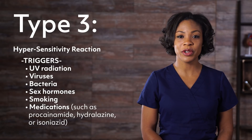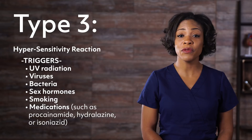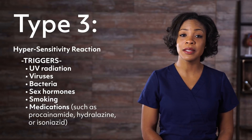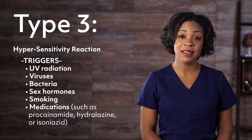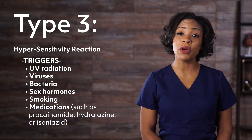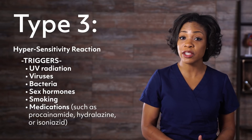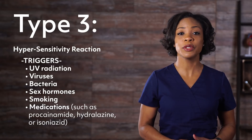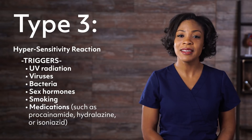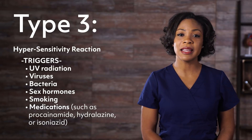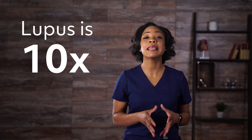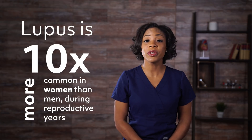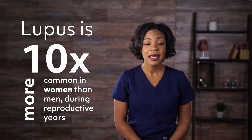Environmental triggers include UV radiation, viruses, bacteria, sex hormones such as estrogen, smoking, and medications such as procainamide, hydralazine, and isoniazid. Lupus is about 10 times more common in women during reproductive years than in men.